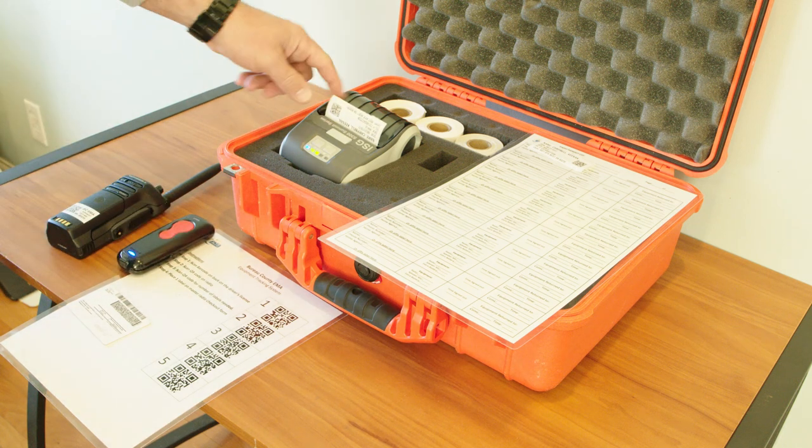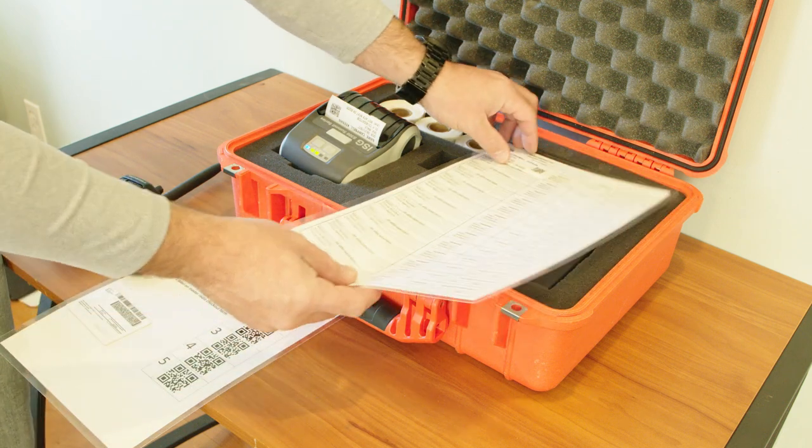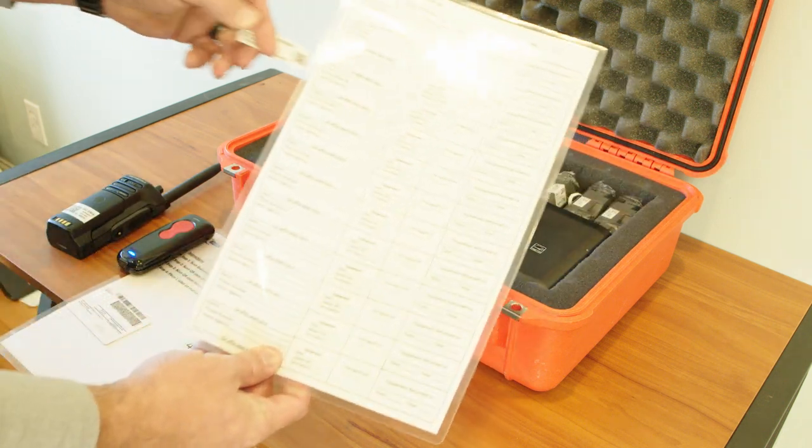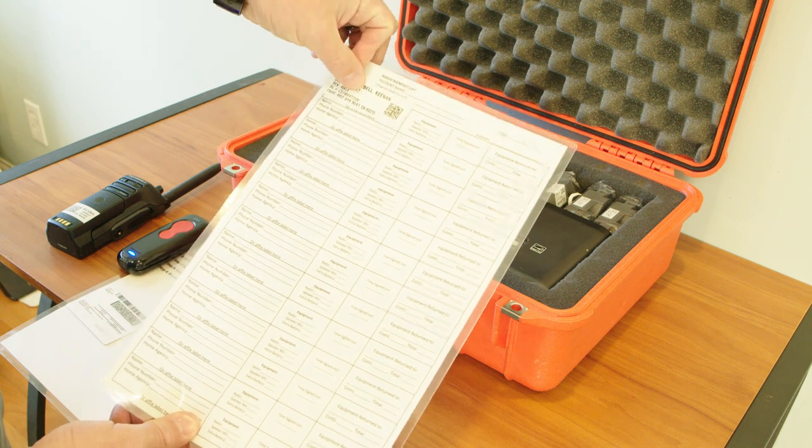Now you'll see the printer has printed the label. We have a form created here, and I've already pre-printed one to tear it off so you can see. The sticker goes right on there.